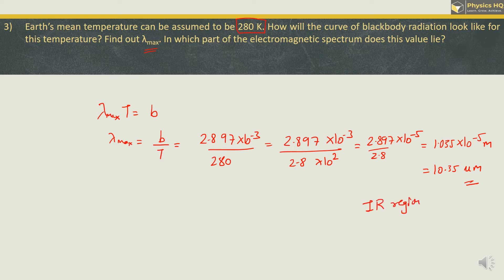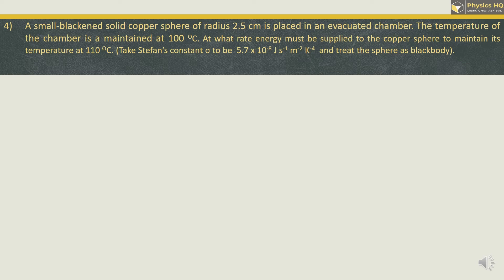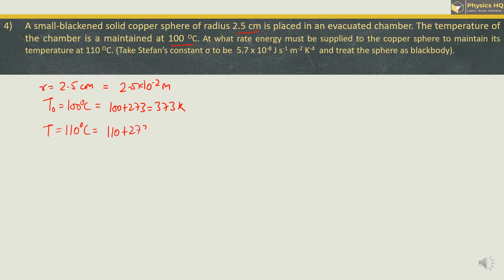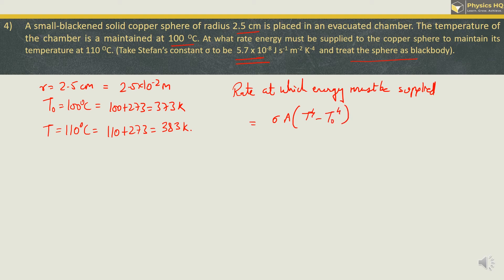So the answer to which part of the electromagnetic spectrum this value lies in is: infrared. Next problem: a small blackened solid copper sphere of radius 2.5 cm (= 2.5 × 10⁻² m) is placed in an evacuated chamber. The chamber temperature is maintained at 100°C (373 Kelvin). At what rate must energy be supplied to maintain the sphere's temperature at 110°C (383 Kelvin)? The rate of energy supply equals σ·A·(T⁴ − T_surrounding⁴).